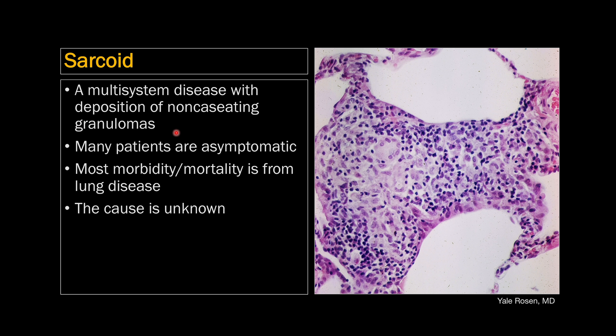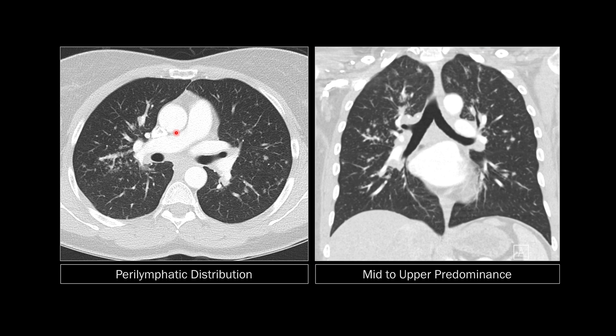Sarcoid is a disease that affects multiple different tissues in the body with deposition of non-caseating granulomas. Many patients don't have symptoms, but if they do, it's mostly from lung disease, and the cause is unknown. The classic appearance in the lungs is a perilymphatic distribution of nodules in the mid to upper lungs — meaning the nodules are clustered along the bronchovascular bundles and along the fissures.